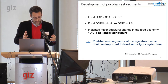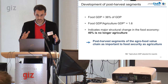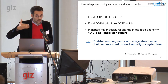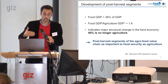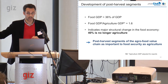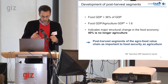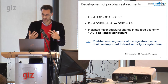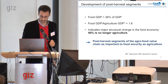Although agriculture remains a pillar of the West African economy, 40% of the food economy is no longer agriculture. Post-harvest segments of the value chain are becoming almost as important to food security as agriculture itself. So what does the data say about the development of these downstream segments of the value chain?